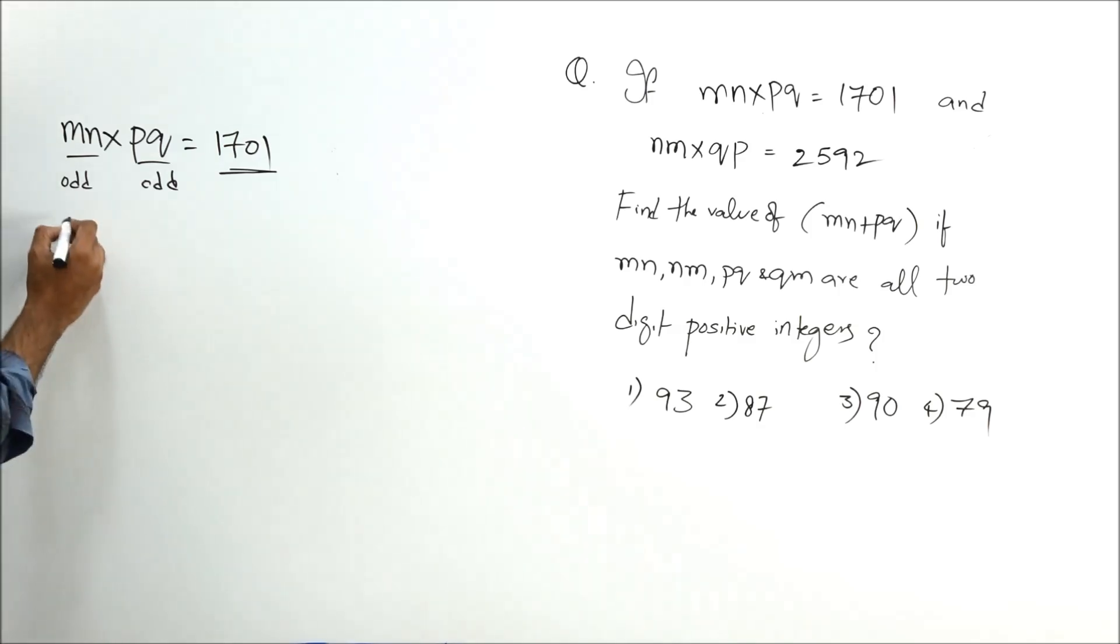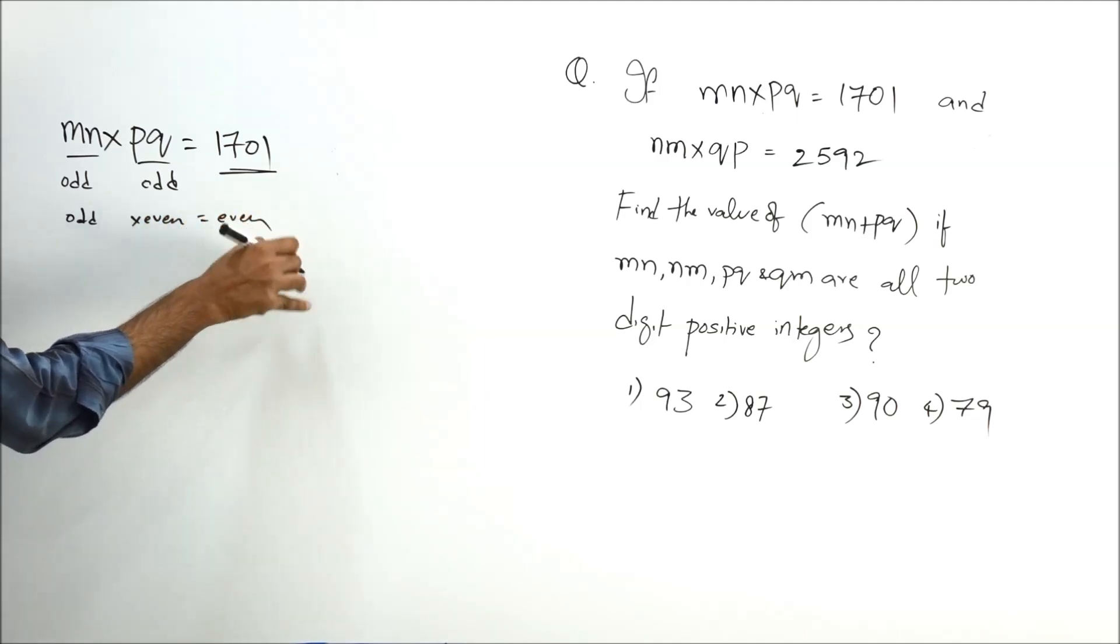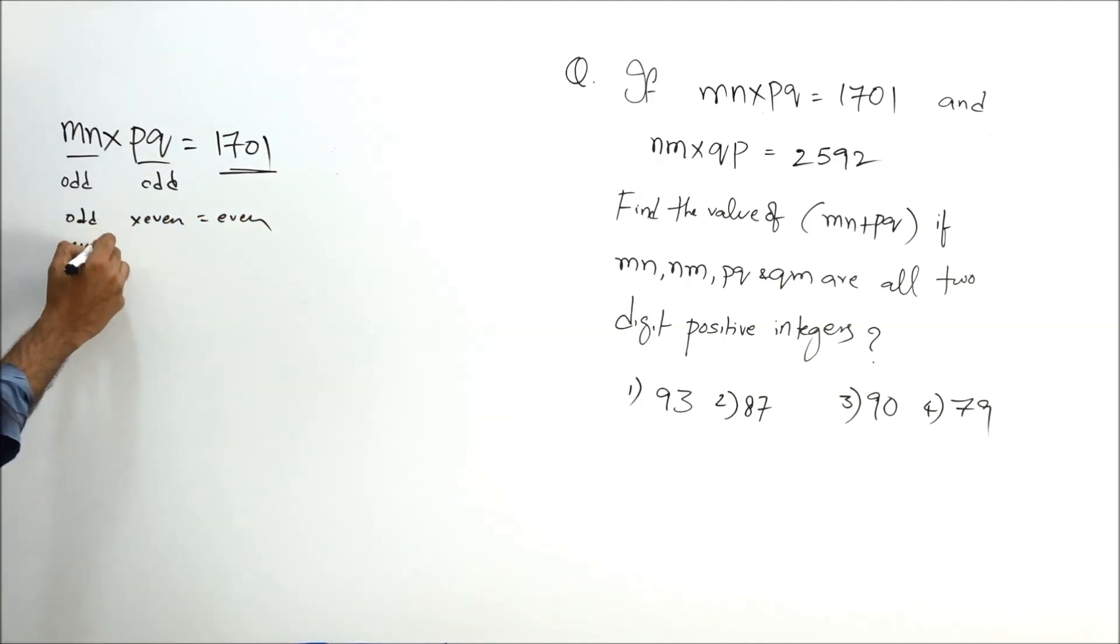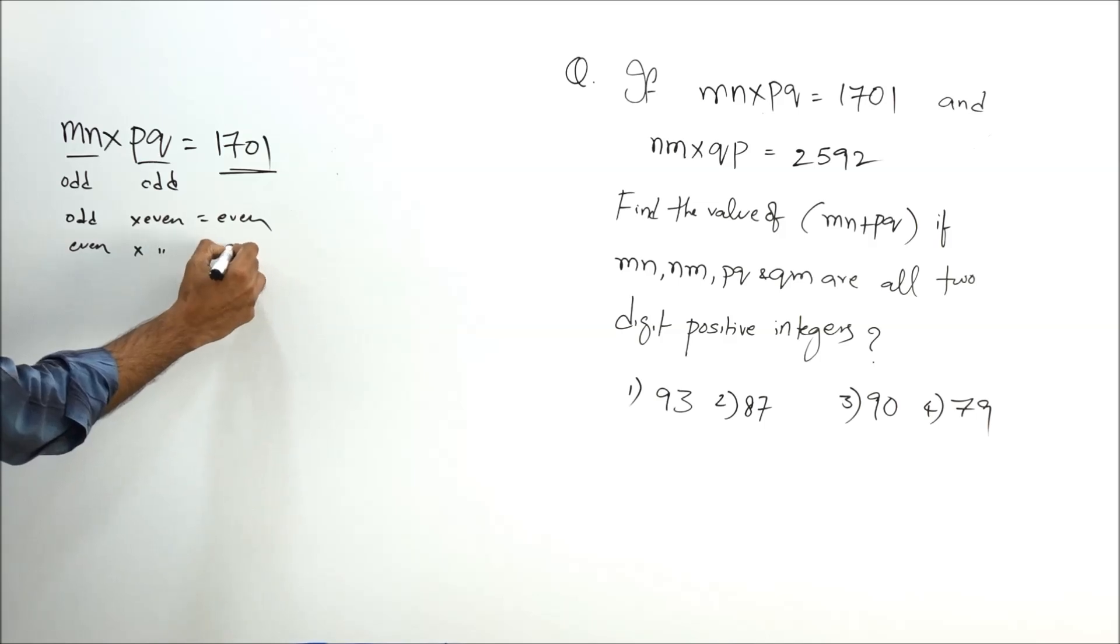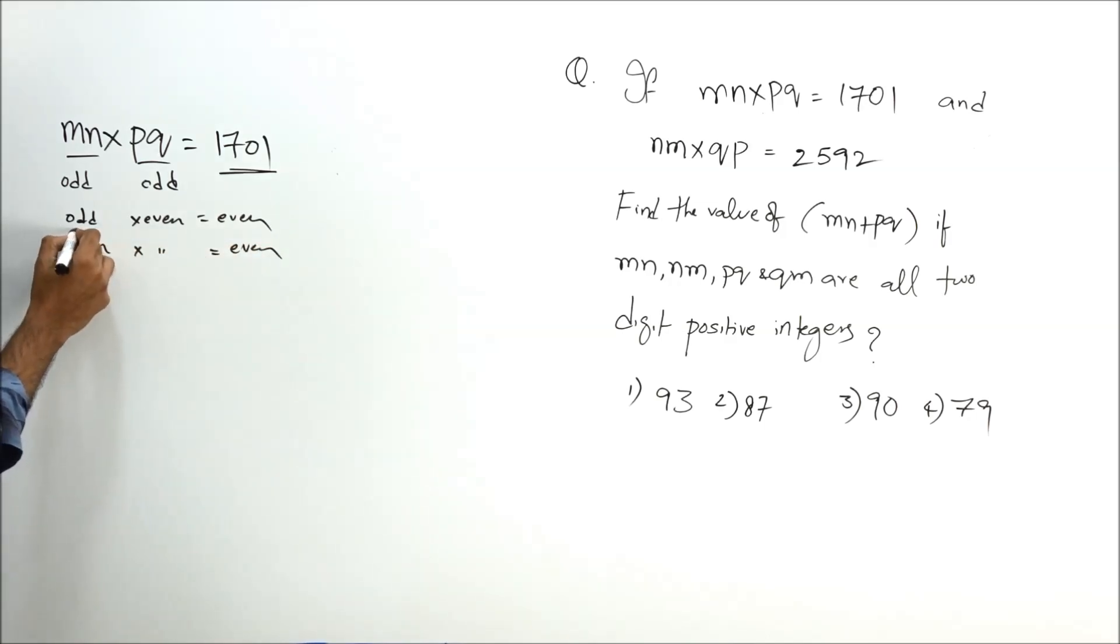Like odd × even you get only even, similarly even × even you will get even. Even if you take even × odd, you know the resultant is again even. So it is for sure that these numbers have to be odd.